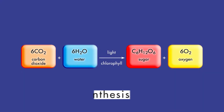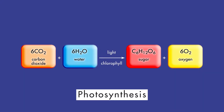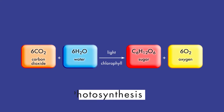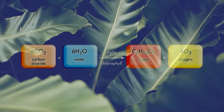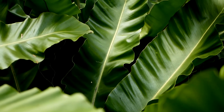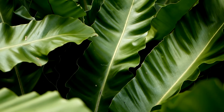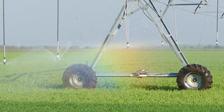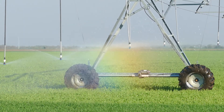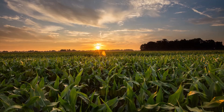Plants use photosynthesis to produce their own food. But for photosynthesis to occur, plants need to obtain light, water, and carbon dioxide from their environments. Certain nutrients are necessary for healthy plant growth. These nutrients must be obtained from the soil or water surrounding the plant.